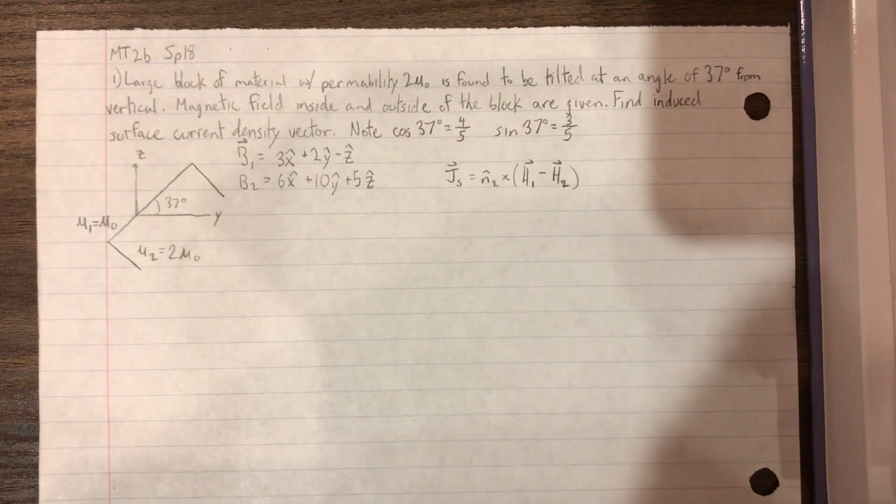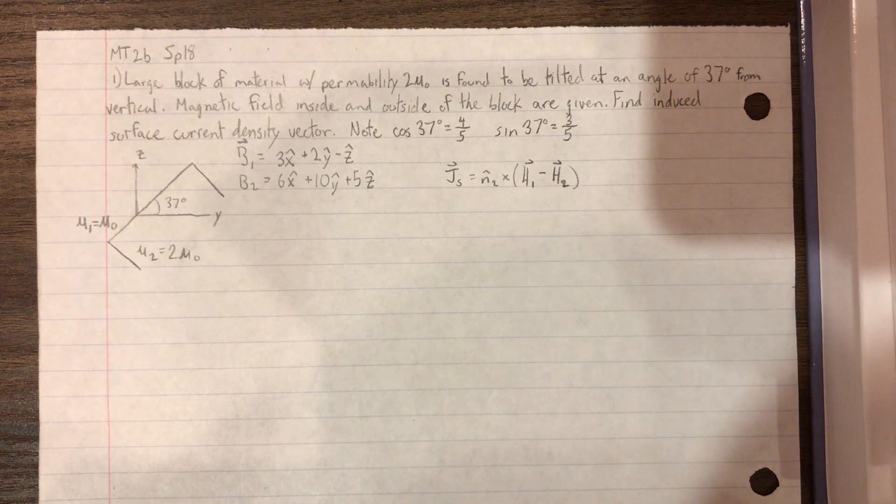The question reads, a large block of material with permeability of 2 mu naught is found to be tilted at an angle of 37 degrees from vertical.